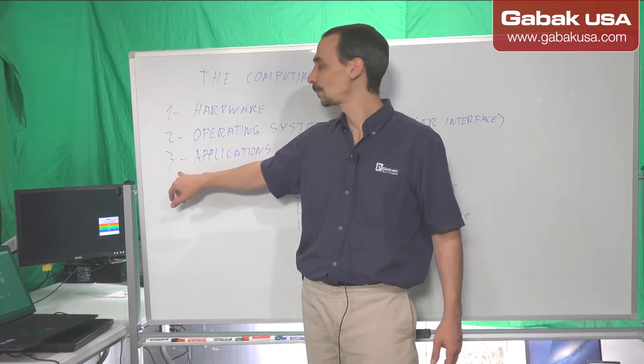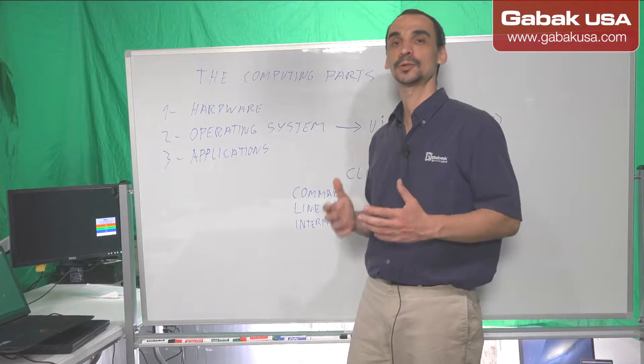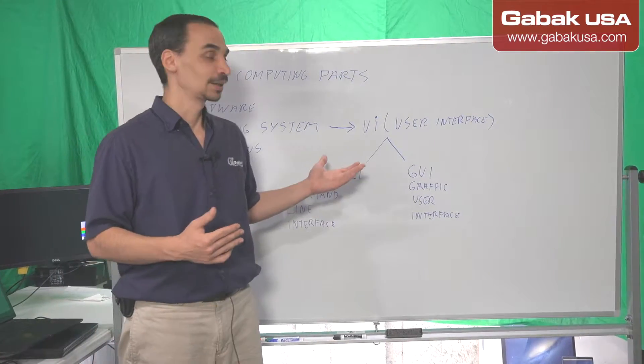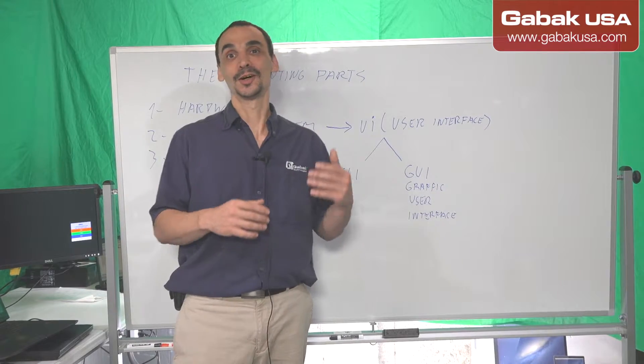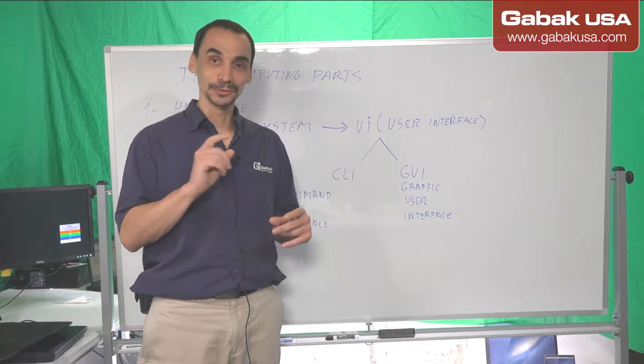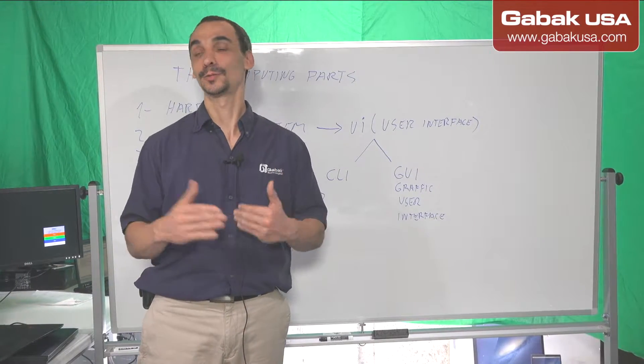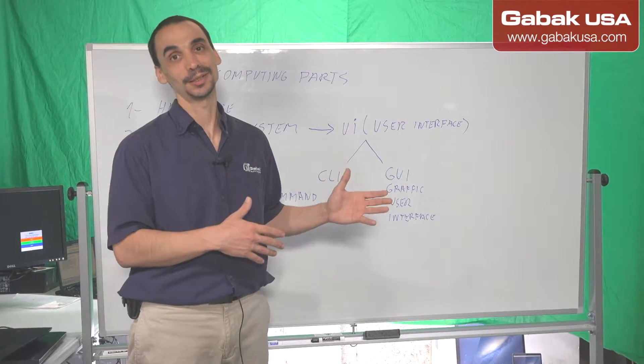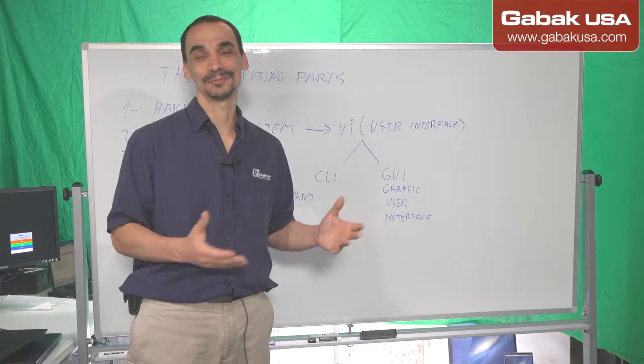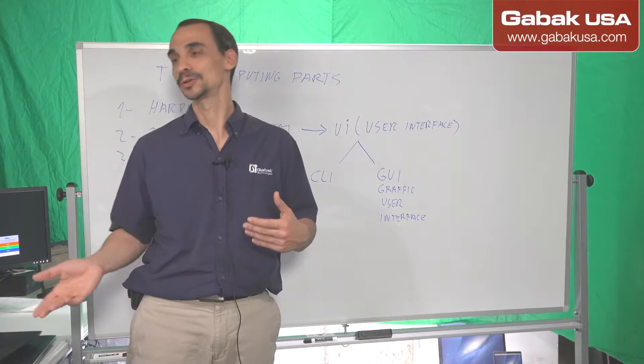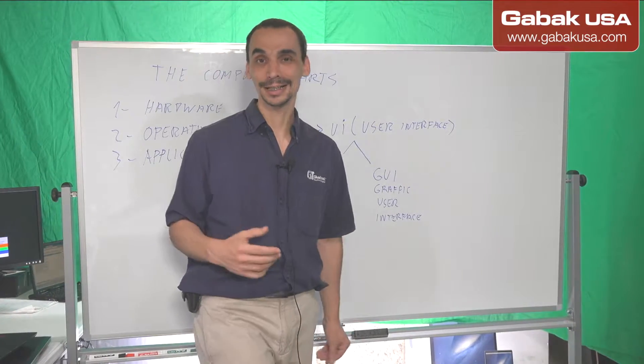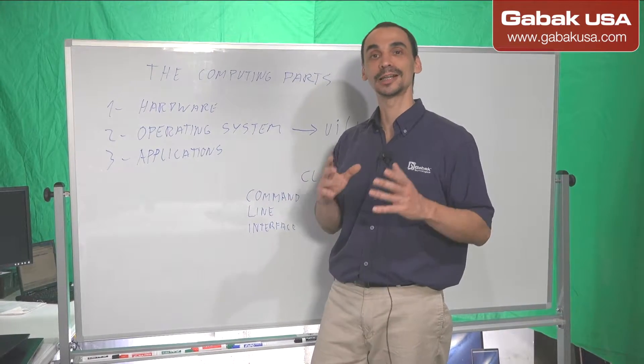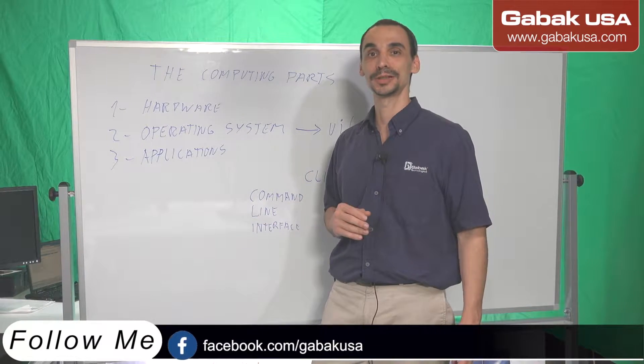And then the last part will be applications. So the applications are going to be all those software that allow you to do a few extra things. Like maybe video editing or maybe if you use Photoshop if you want to touch a photo and other things. So maybe write a letter on Word. You have all those applications that you buy usually separately. It doesn't come with Windows if you buy that or if you buy a Mac. Also if you want to edit videos like I do, I use Final Cut. So those are applications that I have to buy separately. Those are applications that allow you to do special things. So you can do more things with your computer.